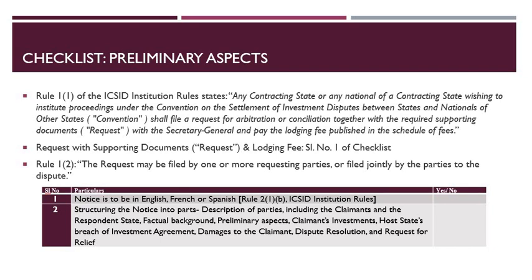Rule 1,2 states that the request could be filed jointly or separately. It states the request may be filed by one or more requesting parties, or filed jointly by the parties to the dispute. This is serial number 1 of the checklist. Serial number 2 is regarding the language of the request. Rule 2,1B states that the request shall be in English, French, or Spanish. Serial number 3 of the checklist is regarding the structuring of the request.